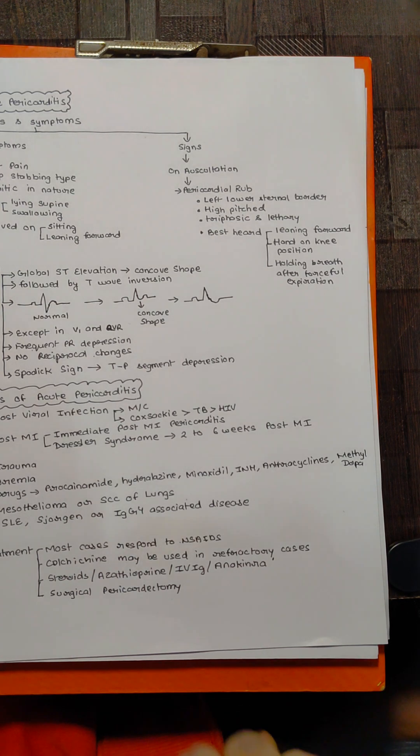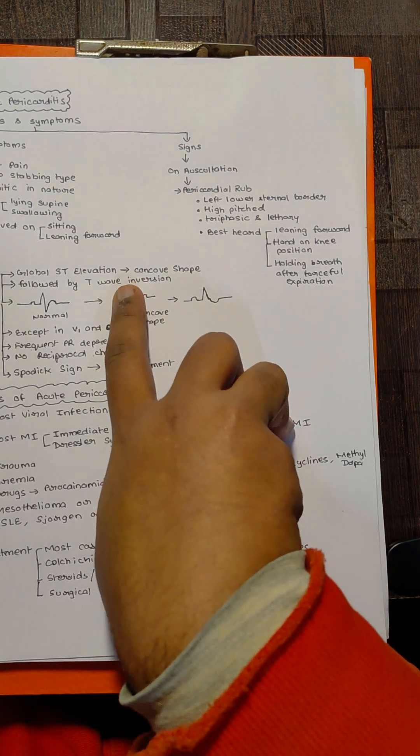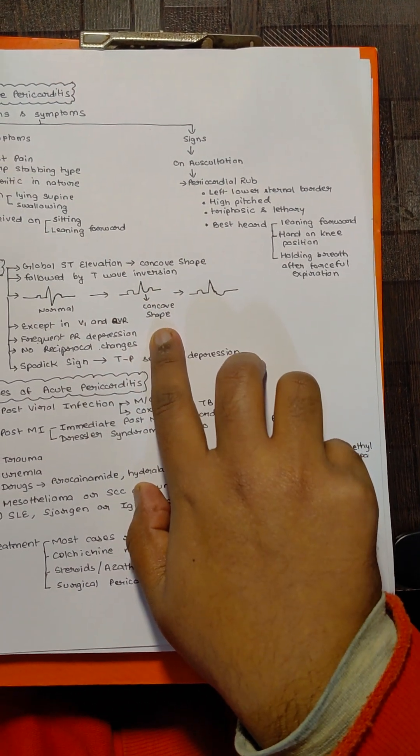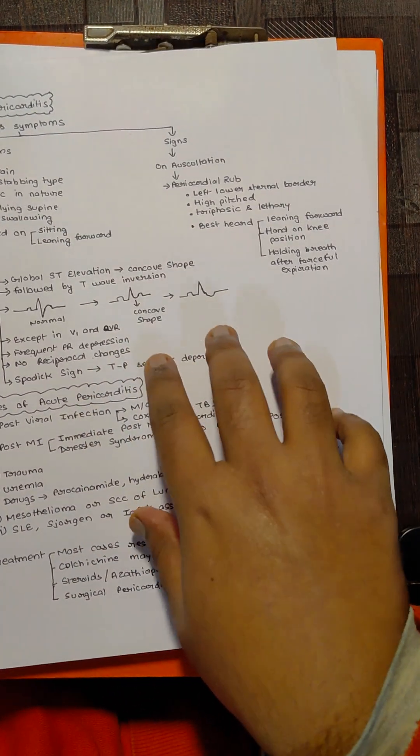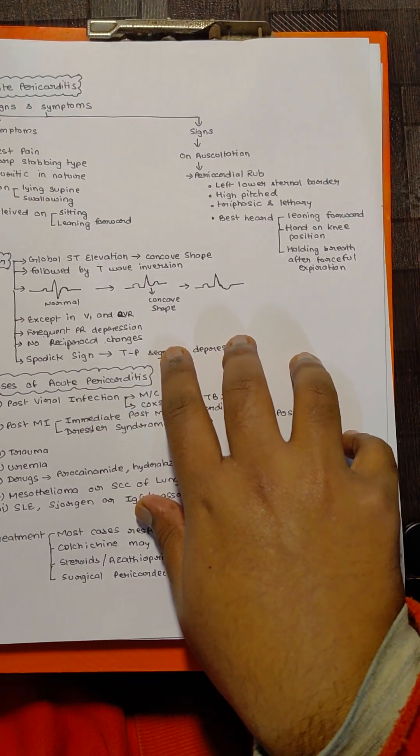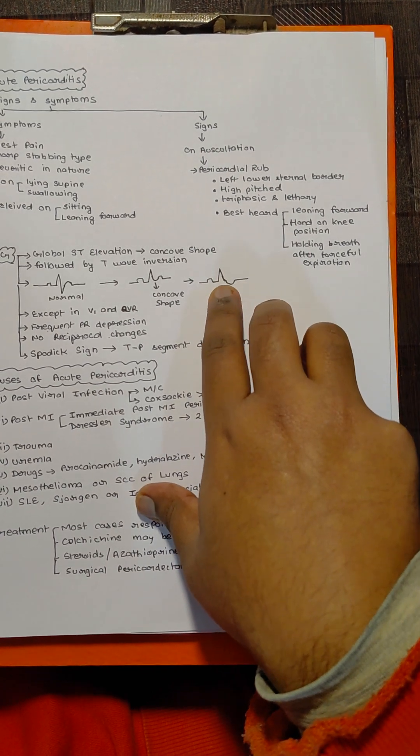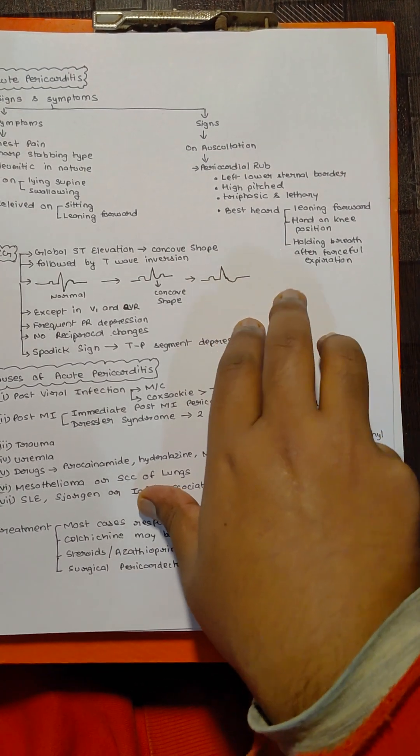I have even drawn it here so you can see how it is a very smooth curve. This concave shape ST elevation usually is nothing to worry about. If the patient comes back to you again and you do an ECG showing T wave depression or T wave inversion, that is also nothing to worry about.